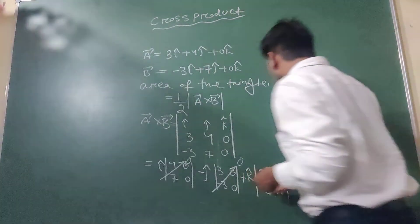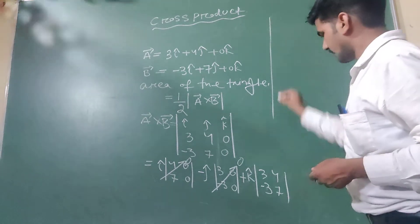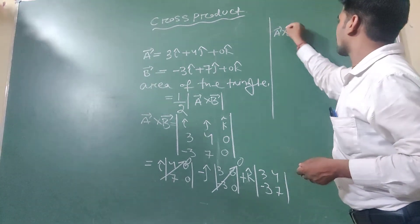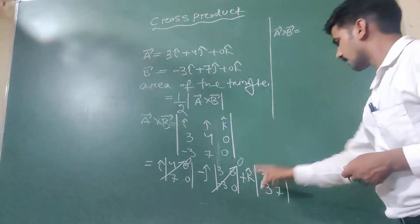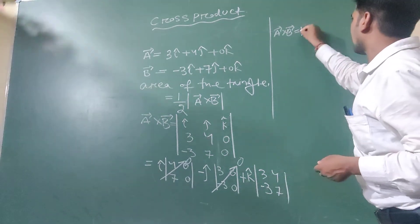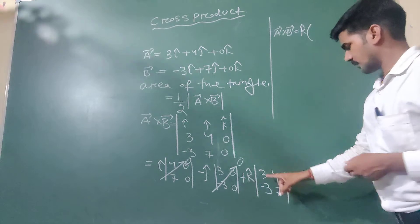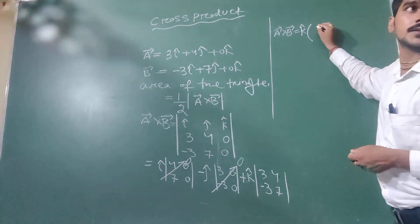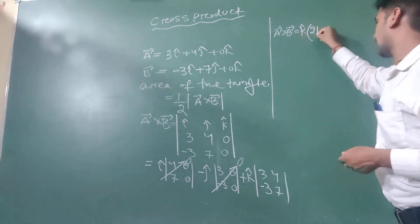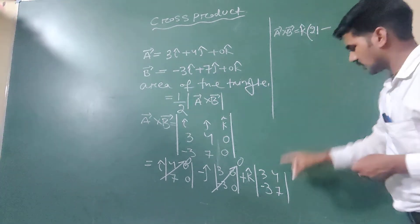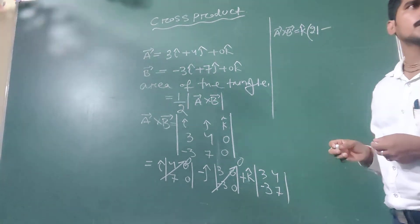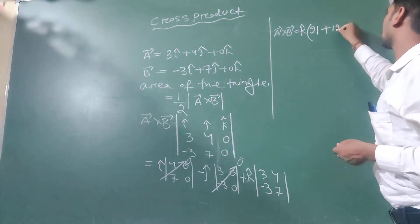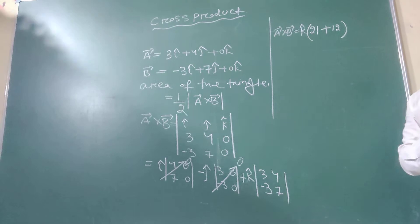So the remaining part: A vector cross B vector equals K cap. Three into seven is 21, minus minus three into four gives plus 12, so K cap times 33.